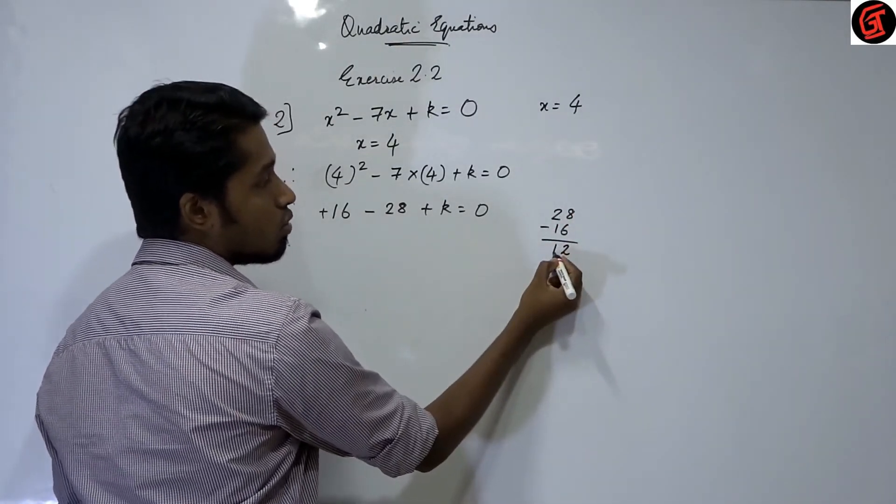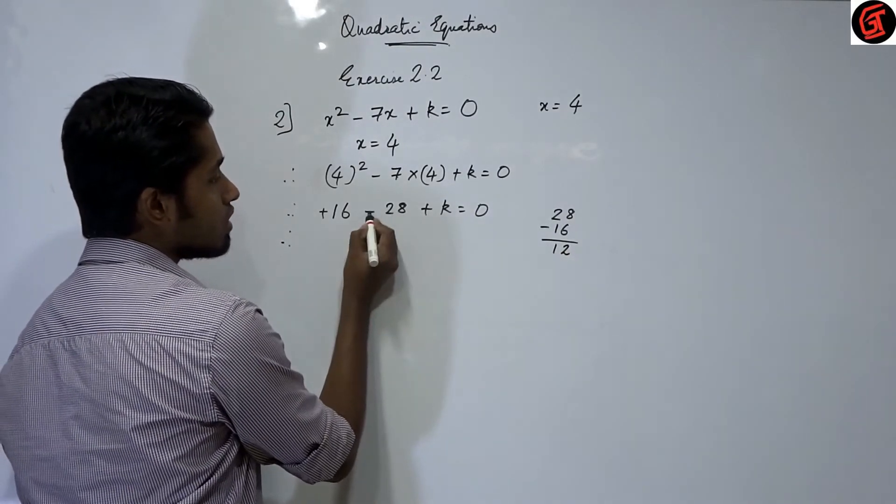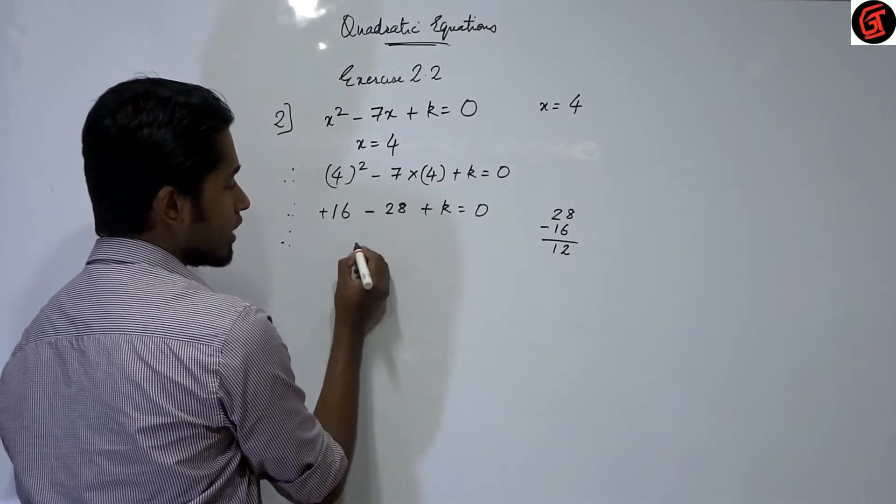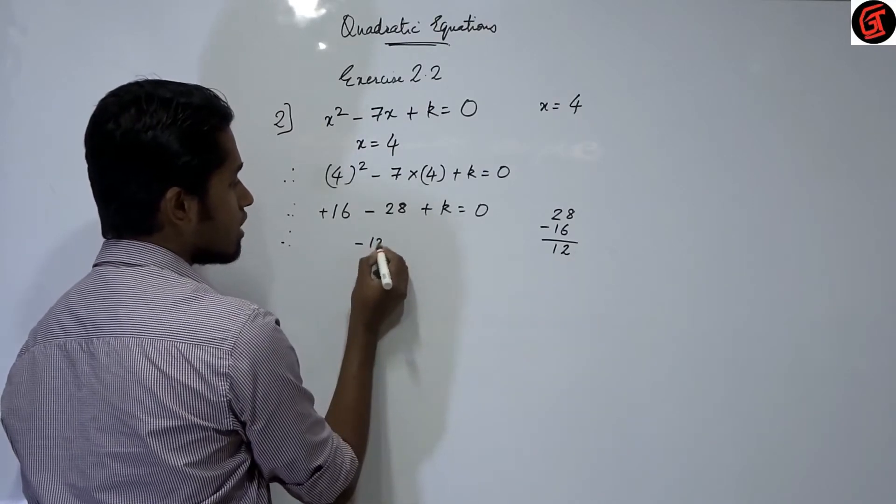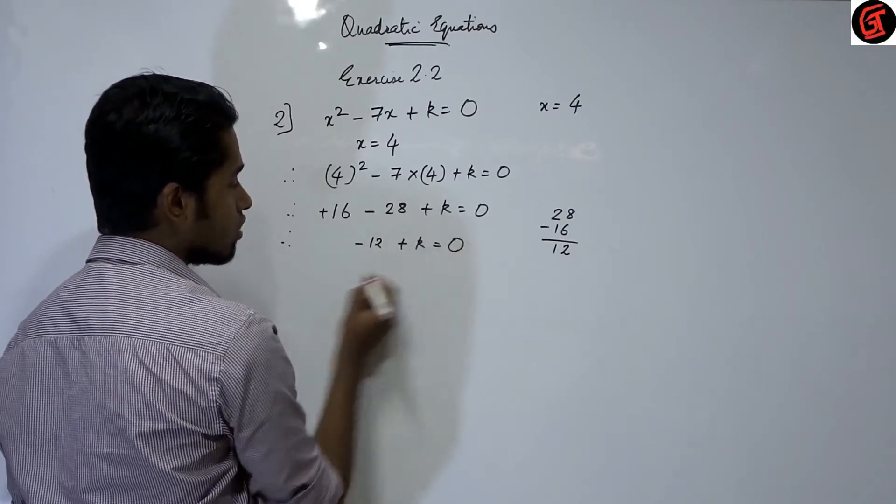What is the sign of the greater number? Minus. This is the greater number. So we get minus and the answer. Minus 12 plus k is equal to 0.